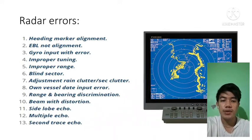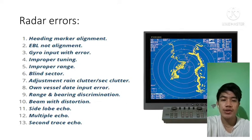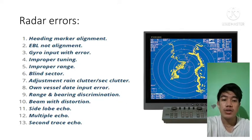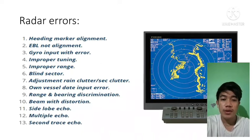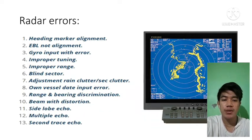Next is the ABL not alignment. When the electronic beam lithography is not aligned, it causes error to the radar. Next is the gyro input error. These errors are modeled in the measured angular rate of the gyros and can be estimated by using other sensors such as the global positioning system or GPS.